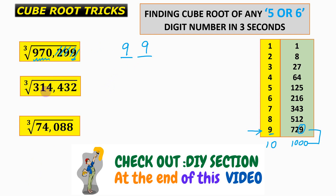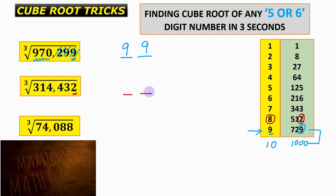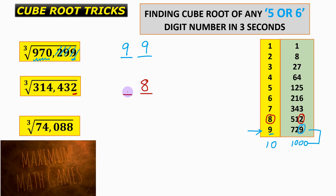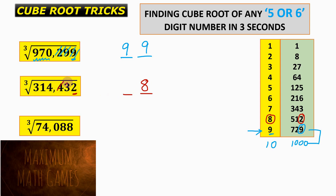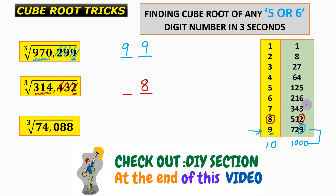The cube root of 314,432: the unit digit is 2, which corresponds to an original unit digit of 8, so we write 8. Discarding the last three digits leaves 314. Since 314 lies between 216 (6³) and 343 (7³), picking the smaller number 6 gives the answer 68.